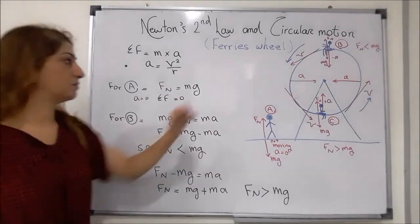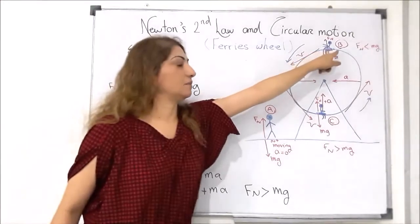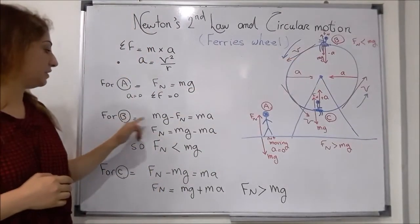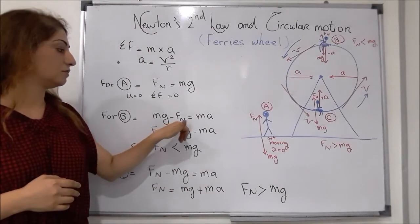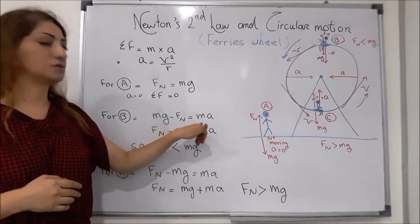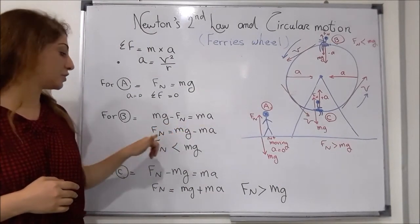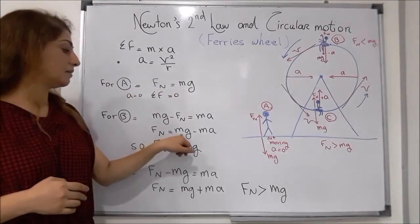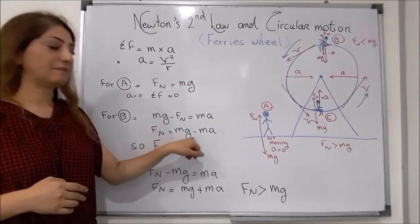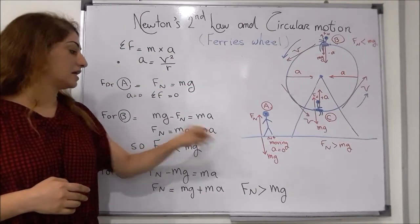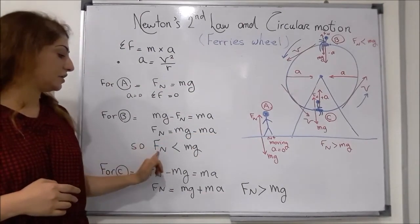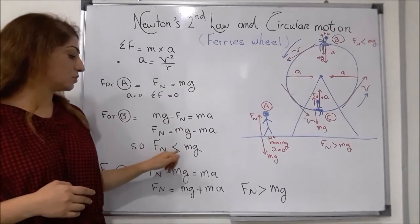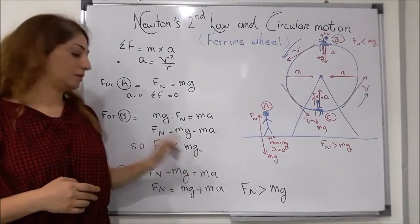For person B at the top of the Ferris wheel, the equation is: Mg minus the normal force equals M times acceleration. This means the normal force equals mass times gravity minus mass times acceleration. At this position, the normal force is much smaller than the weight of the person.